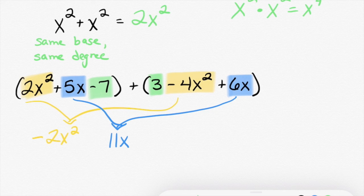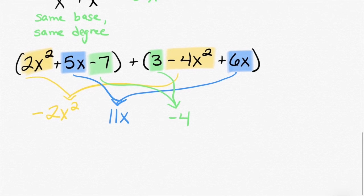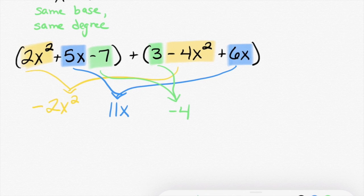And finally, we will combine the constants. Negative 4. So my polynomial, then, is negative 2x squared plus 11x minus 4.